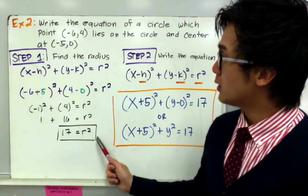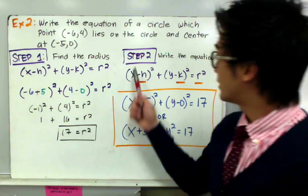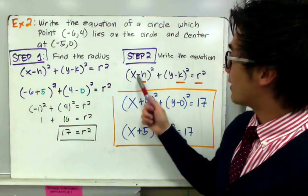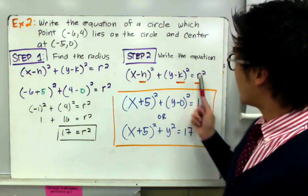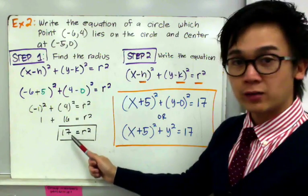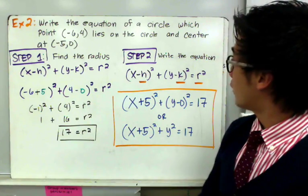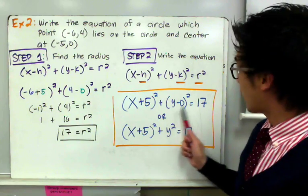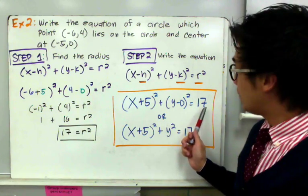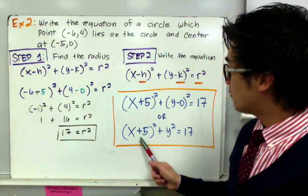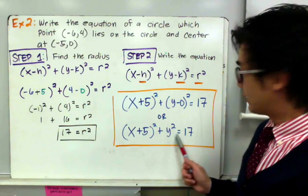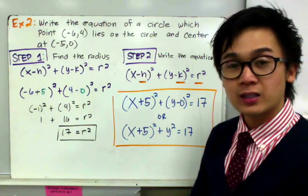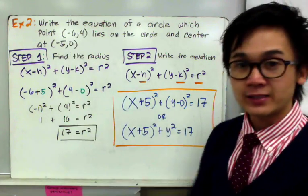So r² = 17. The second step is to write the standard equation of the circle. With center (−5, 0) and r² = 17, by direct substitution: (x + 5)² + (y − 0)² = 17, which simplifies to (x + 5)² + y² = 17. This is the standard equation of the circle given a point and a center.